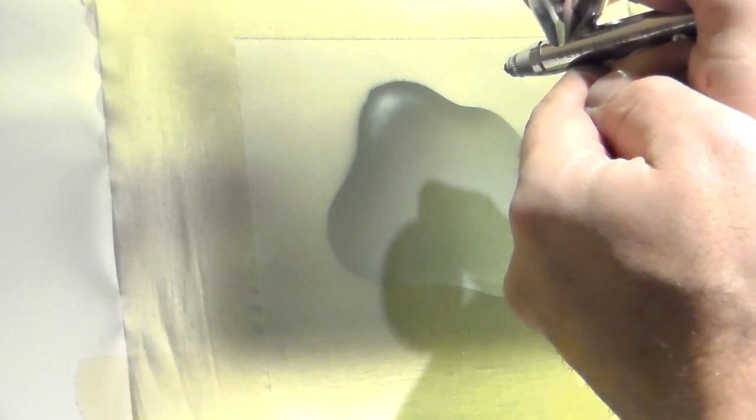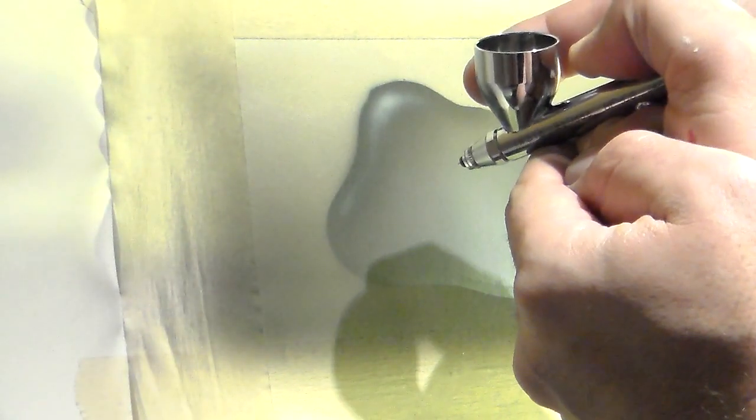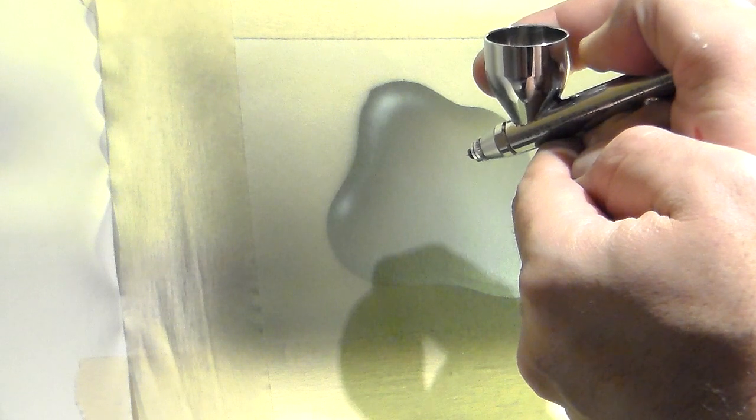And as I said before, now I'm spraying the highlights of the exterior of the water drop. Remember that the black and white I sprayed just before is how light is reproduced in the base of the water drop, and this highlight is on the surface of the water drop, and it will give a more three-dimensional look to it.